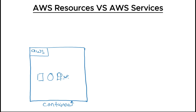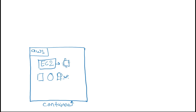Let's understand this with examples. AWS has a service called EC2 — Elastic Cloud Compute. Using this service you can create a virtual machine. So EC2 is the service and the virtual machine is the resource. Another example: AWS has a service called S3 — Simple Storage Service. Using this service you can create a bucket, called an S3 bucket, and store your data in it. So S3 is the service and the bucket is the resource.